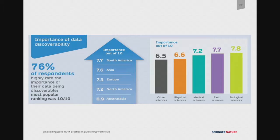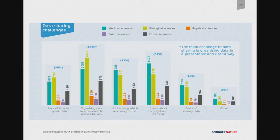In social sciences and humanities, there's less of a drive to share data. The finding I think is most interesting is around the challenges researchers reported. What people reported most commonly was that they weren't sure about copyright and licensing, they didn't know which repository they were supposed to be using, and they didn't know how to organize data in a useful way. These are really practical challenges — essentially researchers are saying: this is important to me, I want to do it, but I genuinely don't know how or what I'm supposed to be doing.